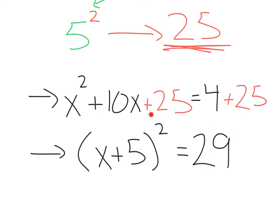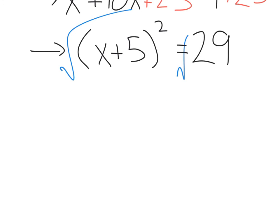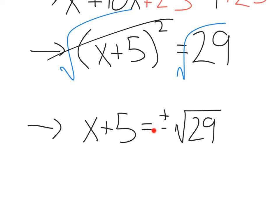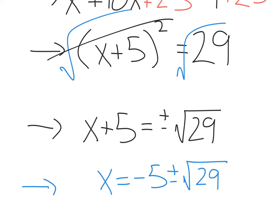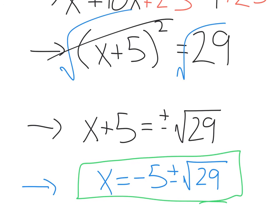This is x plus 5 times x plus 5. Square rooting cancels out that squared, giving us x plus 5 equals plus or minus the square root of 29. Subtracting 5 over, we get a final answer of x equals negative 5 plus or minus the square root of 29. Watch out for imaginary numbers and watch out in case you need to simplify the square root — if you follow that process, you're always going to be successful.